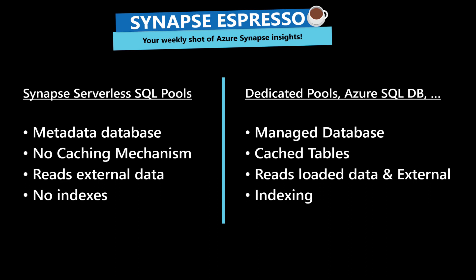You can ameliorate that, as shown in the video on CETAS, but as such no caching mechanism is present. Synapse Serverless SQL pools reads external data — it's something that's built upon external data coming in, like your delta tables, your Spark tables, CSV files, all those things — data coming from other sources that are landing in your lake.